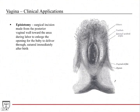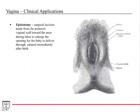Episiotomy is a surgical procedure used during vaginal delivery. The obstetrician makes a posterior incision from the vaginal opening toward the anus to enlarge the birth canal, making it easier to deliver the baby. Once the baby is delivered, the obstetrician sutures the incision closed.